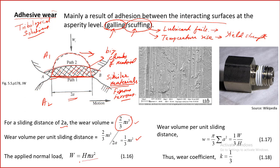Hardness is basically load divided by the projected contact area. Joining the two equations gives us a wear coefficient of 1/3. This small w is wear volume per unit sliding distance. The wear coefficient for adhesive wear appears fixed or constant, but in reality it is not constant and is much less than unity. This analysis only gives certain ideas of how the wear coefficient can be calculated; the actual wear coefficient will be different.